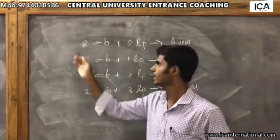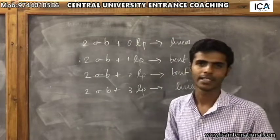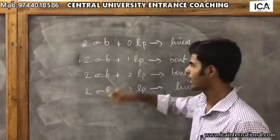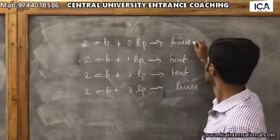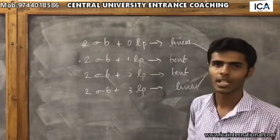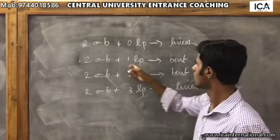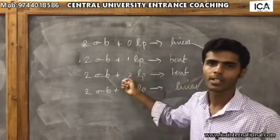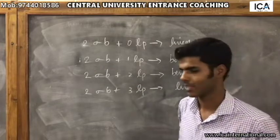We have four classifications in the two sigma bond category. The first one, with zero lone pairs, and the last one, with three lone pairs, both give the same linear shape. In between, the cases with one lone pair and two lone pairs both give the bent shape.